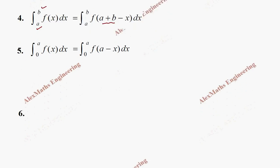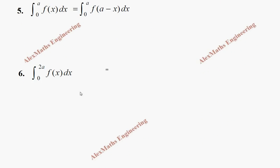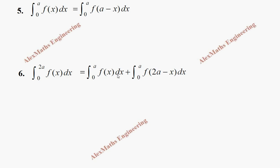The sixth property: when the limit is from 0 to 2a of f(x) dx, this can be split into two parts. One part has the integral from 0 to a of f(x) dx, and the other is integral 0 to a of f(2a − x) dx. Both limits are 0 to a, but one function is f(x) and the other is f(2a − x).